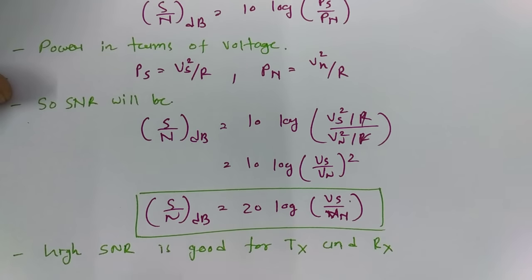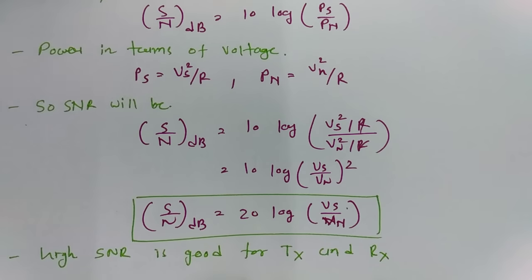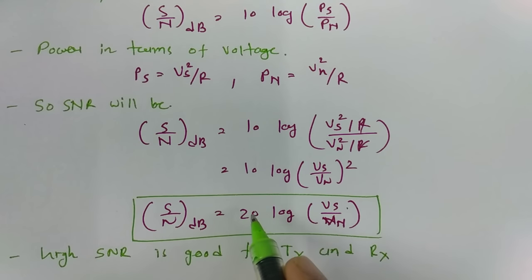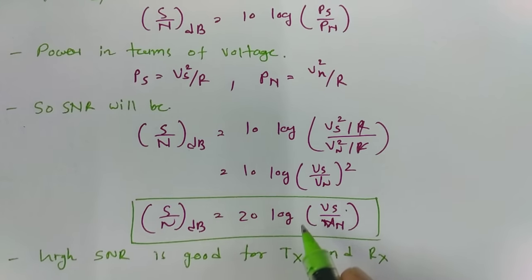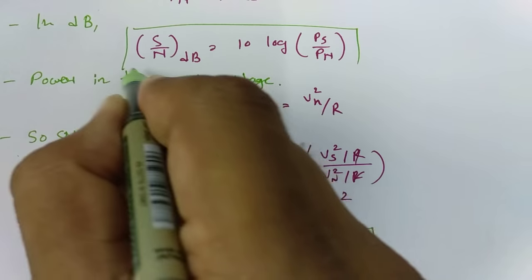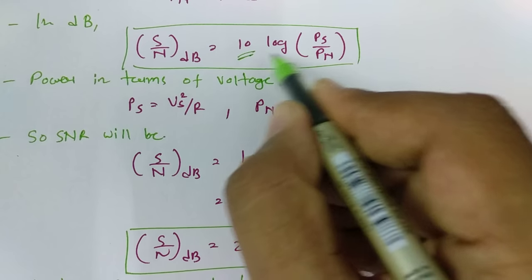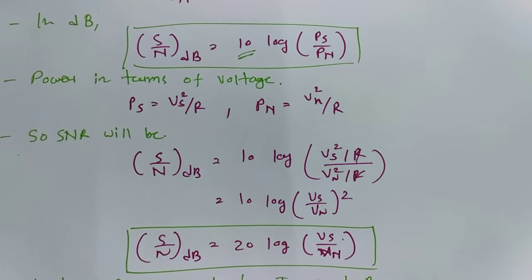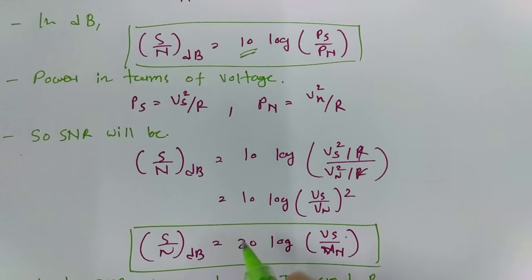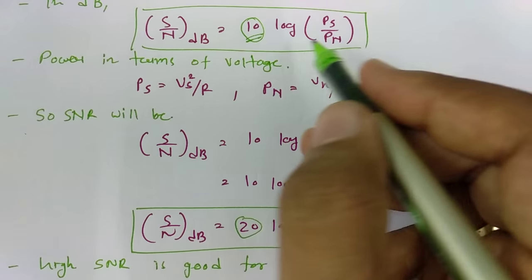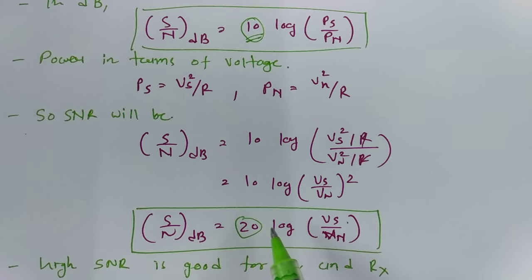Now, as I mentioned, there is a very basic mistake that students make when they calculate SNR. When you calculate SNR using voltage, you should use 20 log of VS by VN. When you calculate SNR by power in terms of dB, you should use 10 log of PS by PN. This is the basic difference between the voltage and power formulas, and this is the mistake I see students making most often when they calculate SNR.